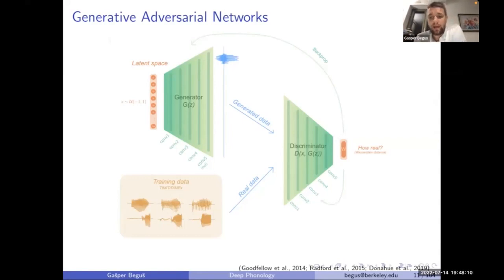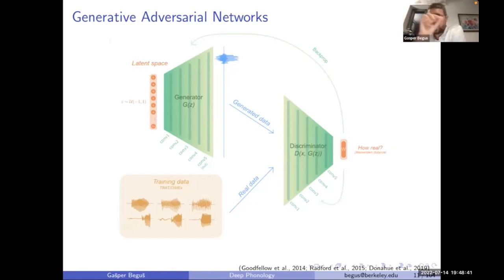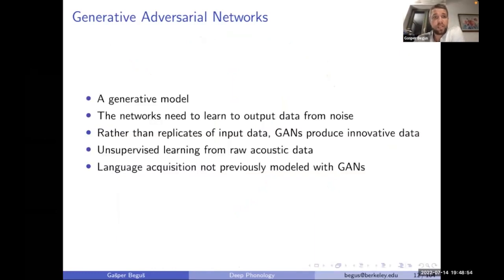At the beginning of training, the generator just produces noise, but over time it becomes so good that it tricks the discriminator into thinking it's producing real data. Crucially, GANs do not replicate data — the objective is not replication, unlike autoencoders. GANs learn by imitation or imagination, which is very appealing for language acquisition.